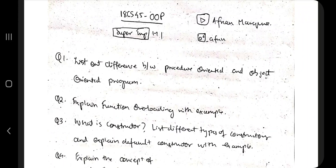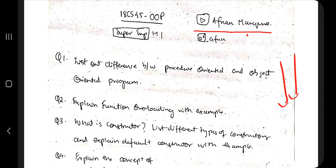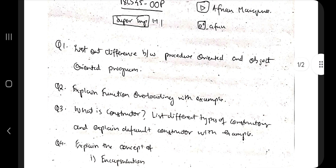Hello everyone! Today in this video we will be discussing the first module of 18CS45, which is Object Oriented Programming. These are the supreme point questions from each module — I have selected five or six key questions. If you want detailed answers, watch the theory video; the link is in the description box. Before starting, if you like this video hit the like button and subscribe to my channel. If you have any doubts, ping me on Instagram.